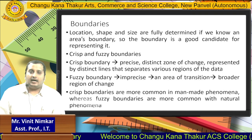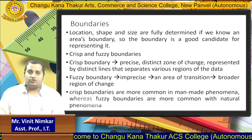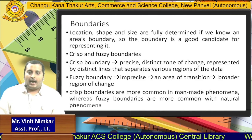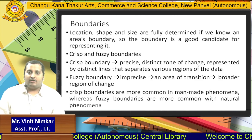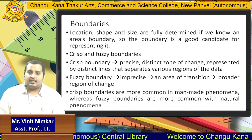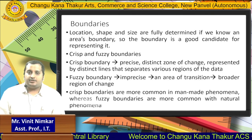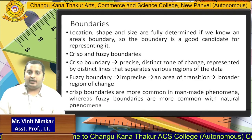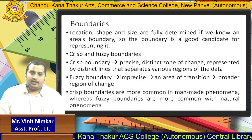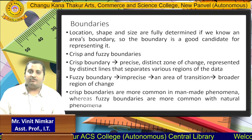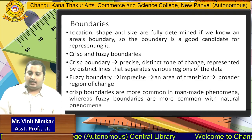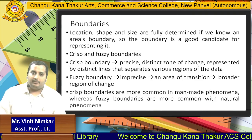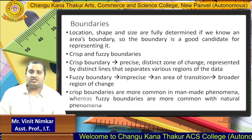Boundaries are another type of geographic phenomenon after geographic objects. Boundaries can either be crisp or fuzzy. Boundaries are very essential to mark particular areas — where a particular area starts and where it ends. Crisp boundaries are more precise, distinct, and can clearly separate two areas. Fuzzy boundaries are comparatively imprecise; their area of transition is visible and they represent a broader region of change. Crisp boundaries are normally considered a man-made phenomenon, while fuzzy boundaries are naturally available.